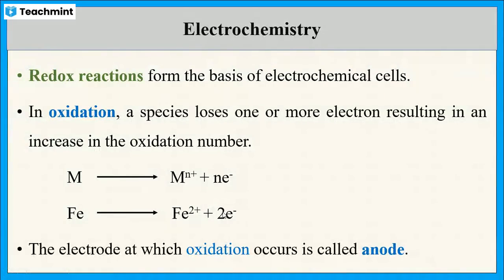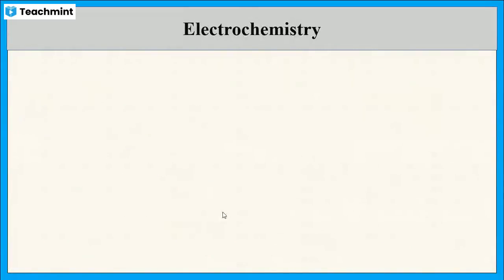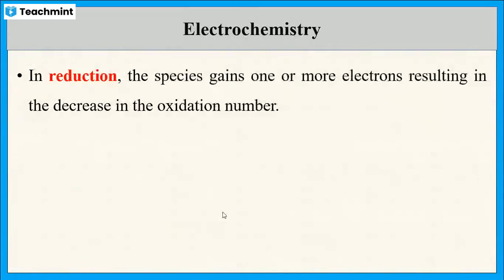The electrode where the oxidation reaction occurs acts as the anode. In the reduction reaction, addition of electrons takes place.